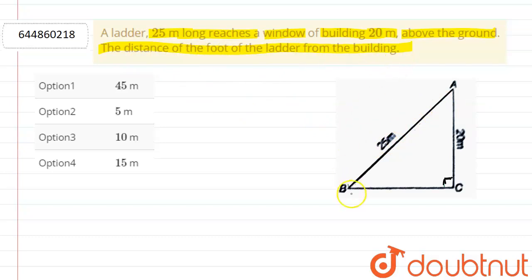of the foot of the ladder from the building. So here this is the foot of the ladder, and we have to find BC. We see that the structure is forming a right angle triangle. Here this is the distance above the ground.